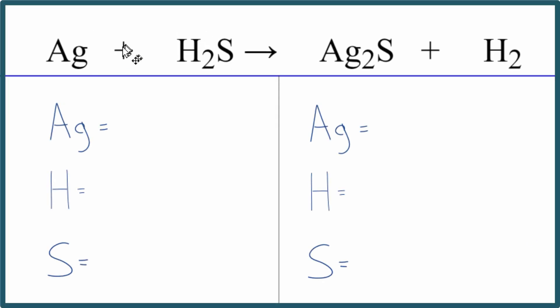So in this equation we have Ag plus H2S. This is silver and this is hydrogen sulfide. This would be a gas, and this is what makes silver tarnish. If you have really nice silver and it gets tarnished, it's because the H2S is combining with the Ag.